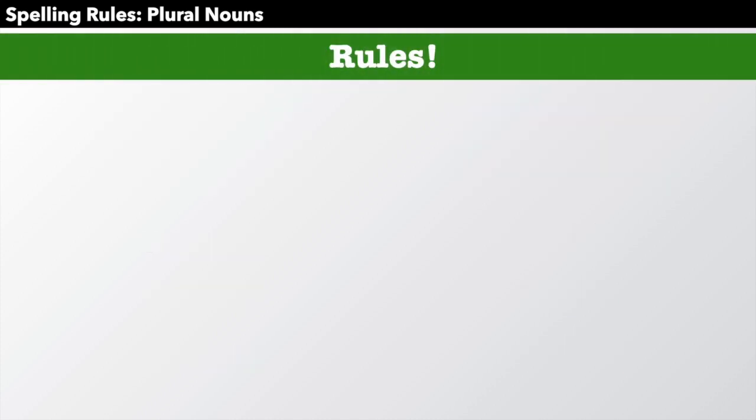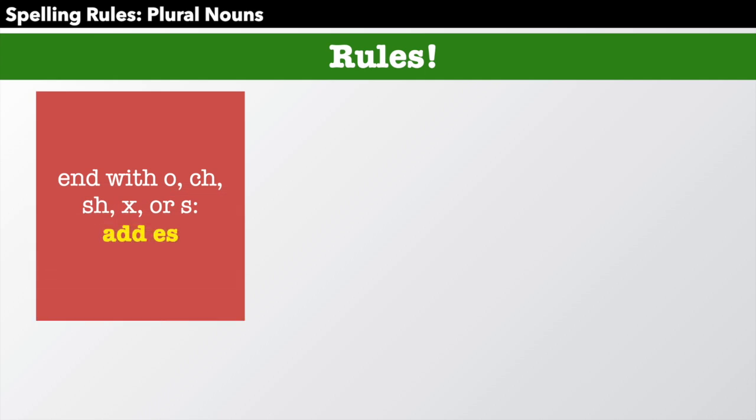Here are the rules we can review. Number one. Does the noun end with O, CH, SH, X, or S? Add es.